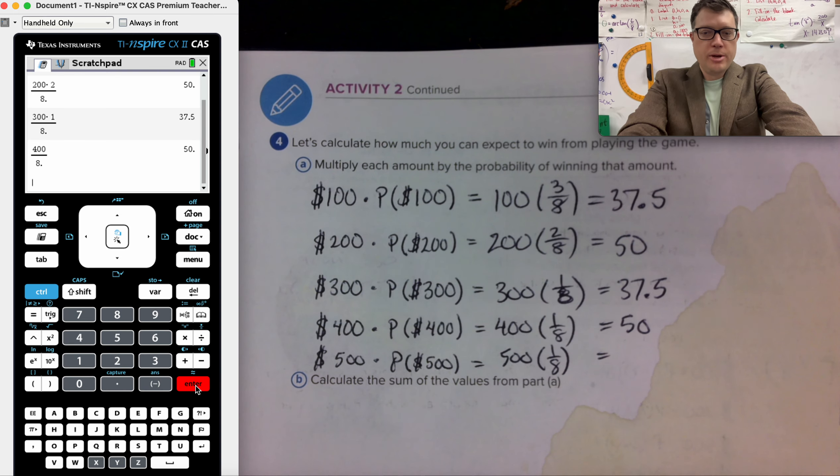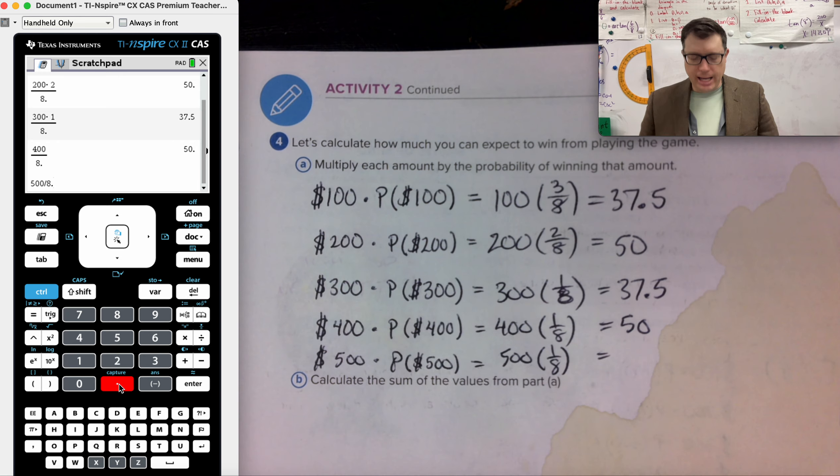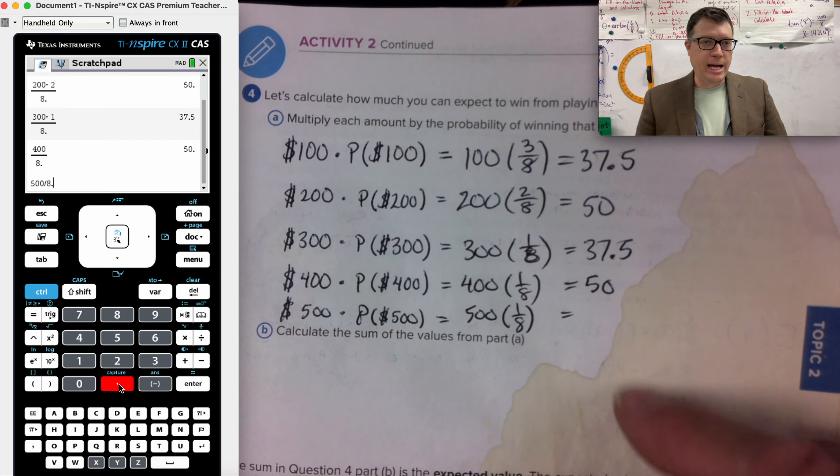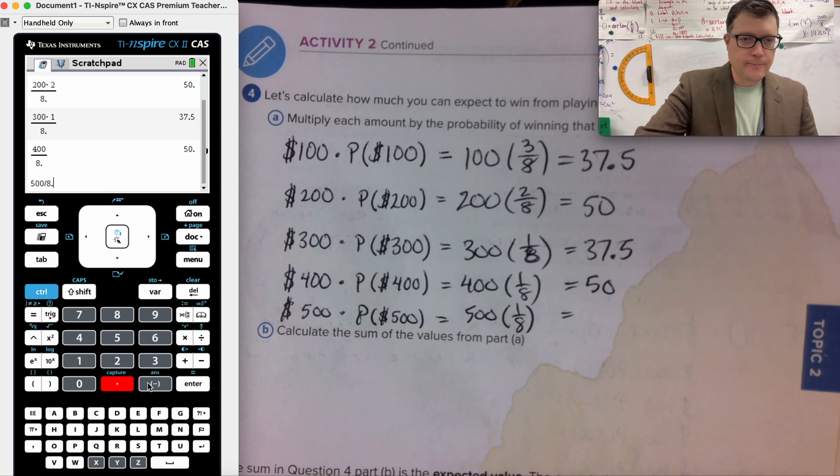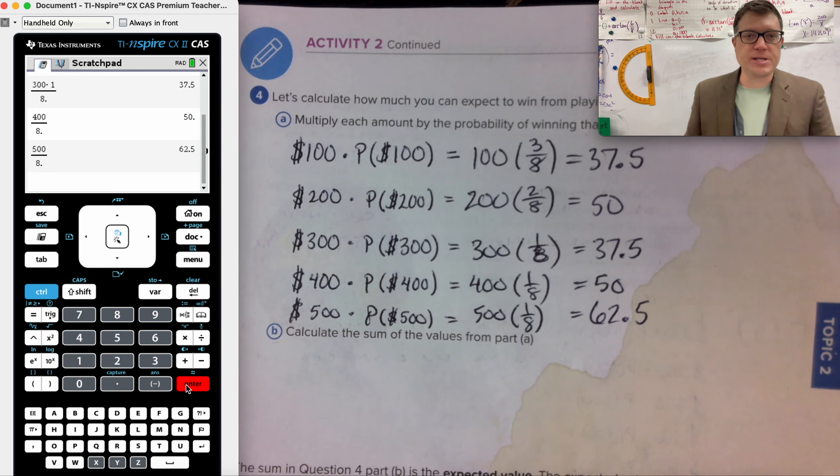400 divided by eight. 50 bucks. And now 500 divided by eight. By the time I'm divided by eight, 500 times one is 500. Then you're dividing by eight. So that's what I have in the calculation over there. 500 divided by eight. 62.50.